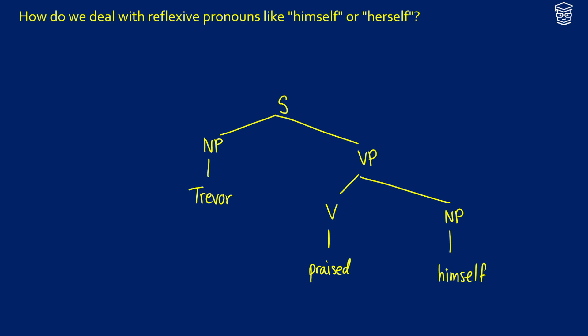So we know that praise is going to be a transitive verb, so this is going to be type EET. So I'm going to write it like this, and that's going to propagate up the tree. The VP praised himself should be type ET, Trevor should be an E, and the S should be type T.